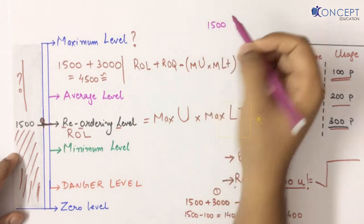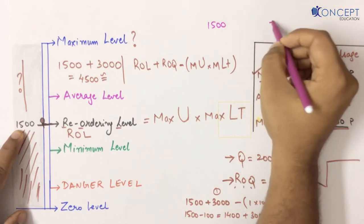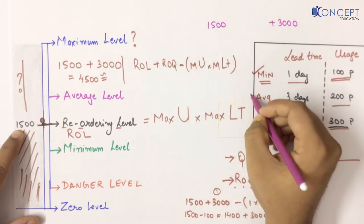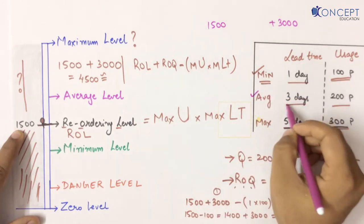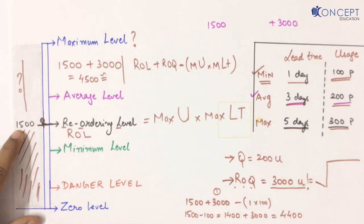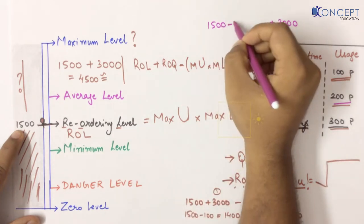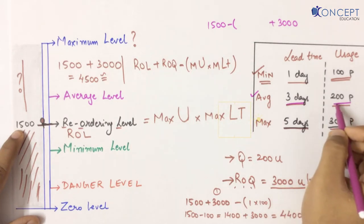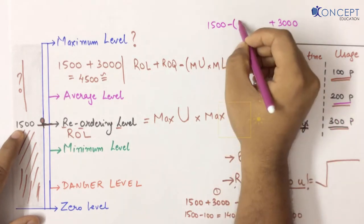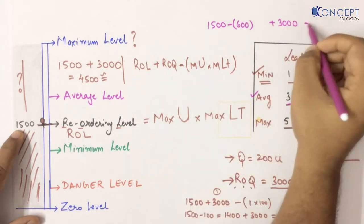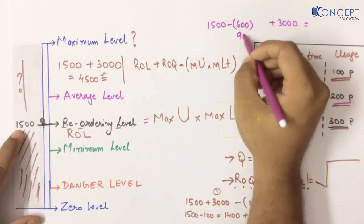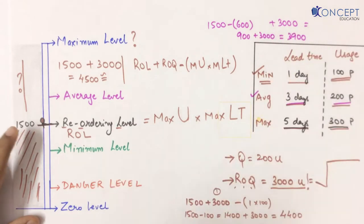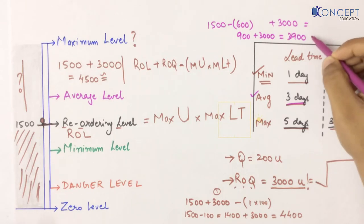Today our stock is 1500, then we have to order. If we order, some days later 3000 will come. Average will come — usage will also be average. So what will happen? 1500 was over 3 days. How much will we use? 200 per day. So 200 × 3 = 600. That means 1500 − 600 = 900, plus 3000. So my level in average scenario is 3900, which is not my maximum possible quantity.